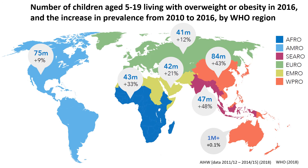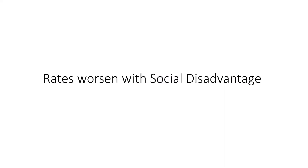This map shows the number of children living with overweight or obesity in 2016 and the increase in prevalence from 2010. Australian data from the Australian Institute of Health and Welfare show that over a million Australian children live with this condition, but that the increase has been relatively stable since 2010.